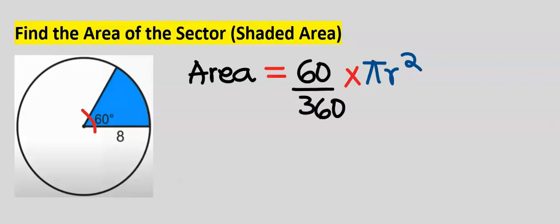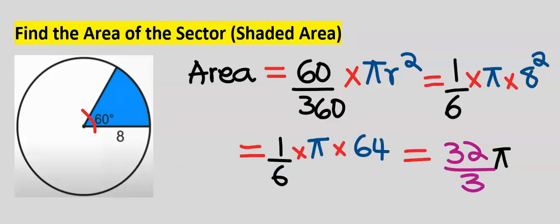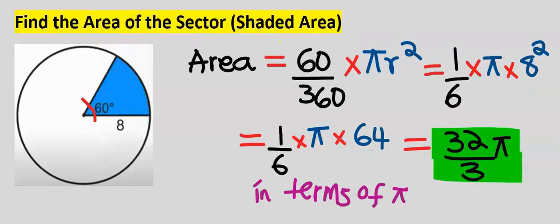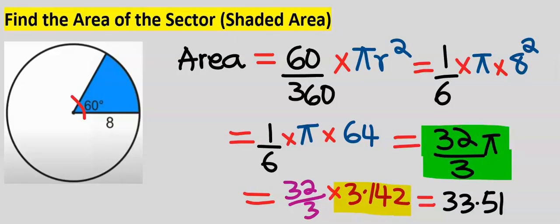Next, we substitute for the radius, which is 8. Solving carefully, our answer is 32/3 π. Here we have left our answer in terms of π. If we take π as 3.142, the real value is 33.51.